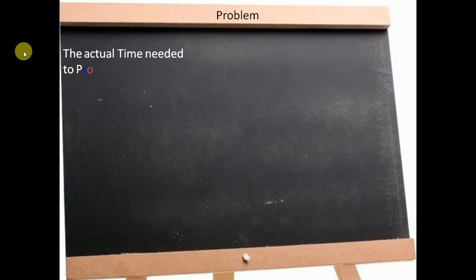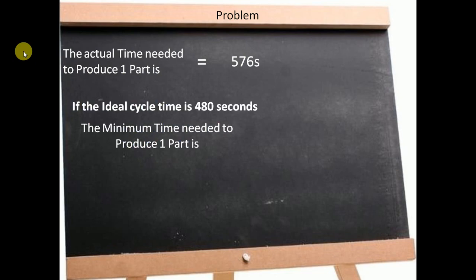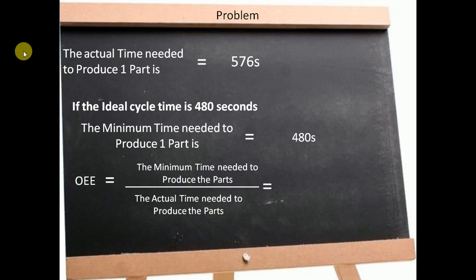Coming to the problem, the ideal cycle time is 480 seconds as given. Thus, by the definition, we can calculate OEE as the ratio of the minimum time needed to produce one part divided by the actual time needed to produce the part, that is 480 seconds divided by 576 seconds, which gives OEE as 83%. This means 83% of the total production time is used actually for production, and the rest 17% is lost.